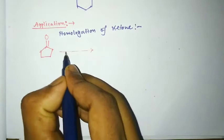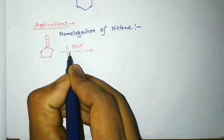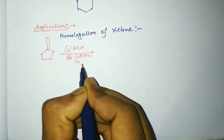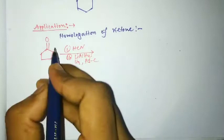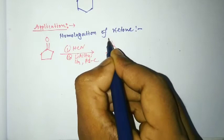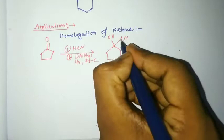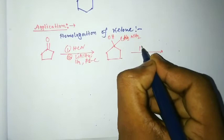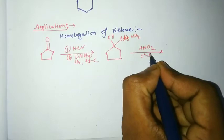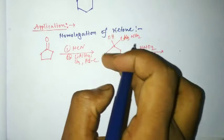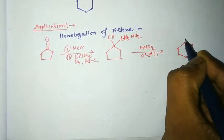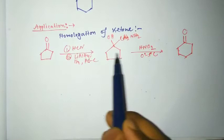This is a five-membered ketone. Step one: treat with HCN. Step two: lithium aluminium hydride with H2 and palladium on carbon as catalyst. This converts to OH, CN, then CH2NH2. Then in presence of nitrous acid, Tiffeneau-Demjanov rearrangement occurs and the five-membered ketone is converted to a six-membered ketone.